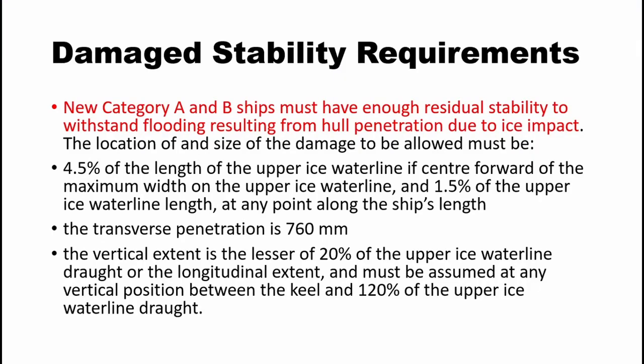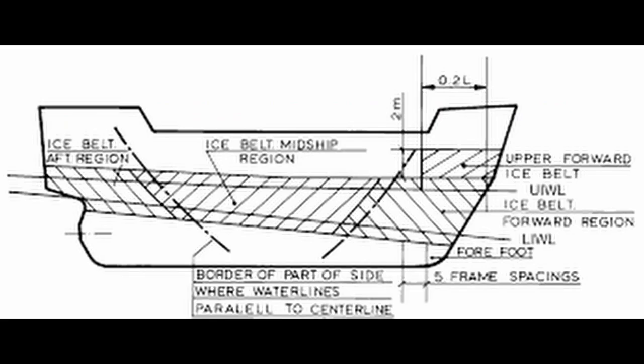Stability in Damaged Condition: Category A and B ships must have the ability to withstand flooding resulting from hull penetration due to ice impact or collision with ice. In this slide you can see three requirements regarding upper ice waterline etc. The surveyor might be keenly concerned about stability requirements because you are expected to spell them out word by word.